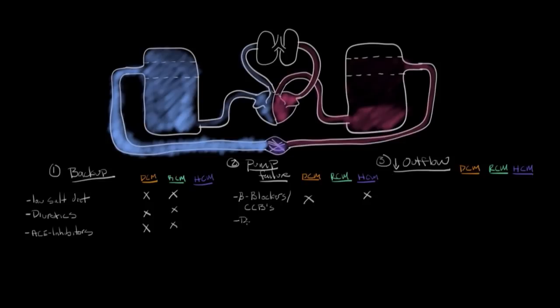And the next medication here is digoxin. And digoxin isn't used all that frequently, but it can be used for dilated cardiomyopathy. And what it does is it increases the contractile strength of the heart muscle to overcome this pump failure. And it's really only used in dilated cardiomyopathy. So these are the medications that are used to treat the pump failure.